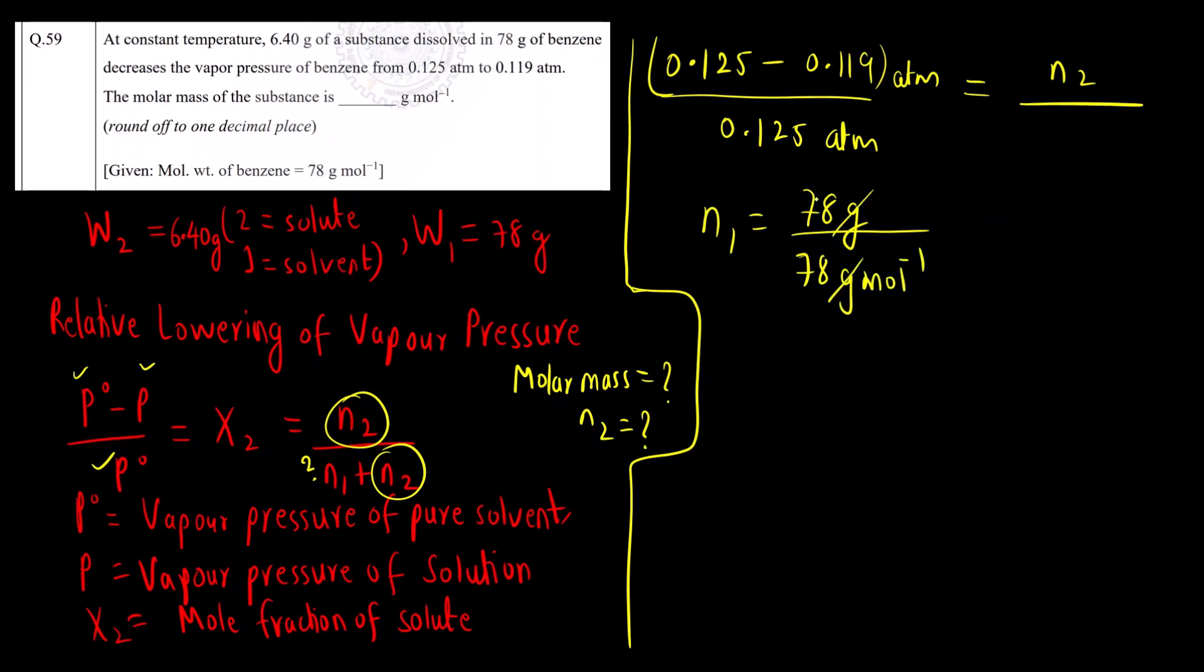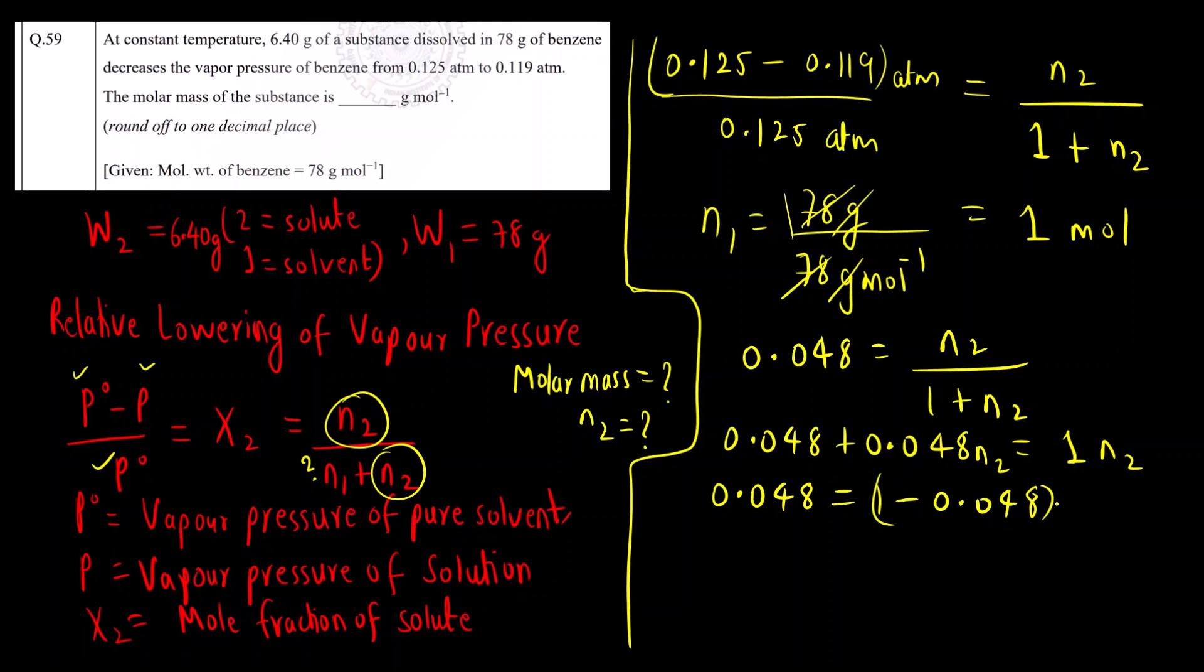78 divided by 78 equals 1 mole. So this will be 1 plus N2. If you solve this, 0.048 equals N2 divided by 1 plus N2. 0.048 plus 0.048 N2 equals N2. So 0.048 equals 1 minus 0.048 N2. The value of N2 is 0.05 moles.